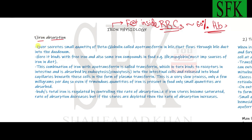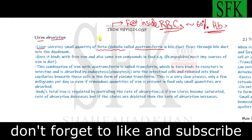How is iron absorbed? First, the liver secretes a small quantity of a beta globulin called apotransferrin in the bile. Globulins are plasma proteins, and apotransferrin is a beta globulin secreted by the liver into bile, which flows through the bile duct into the duodenum. Here in the duodenum it binds with free iron and also iron compounds in food, such as hemoglobin and myoglobin obtained from the diet.